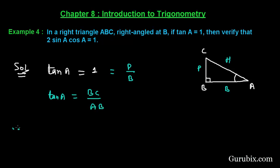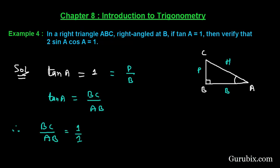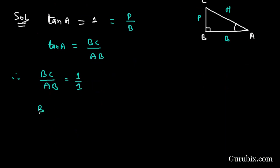Therefore BC over AB is equal to 1 over 1 or we can say that BC is equal to AB and we let this equal to K.